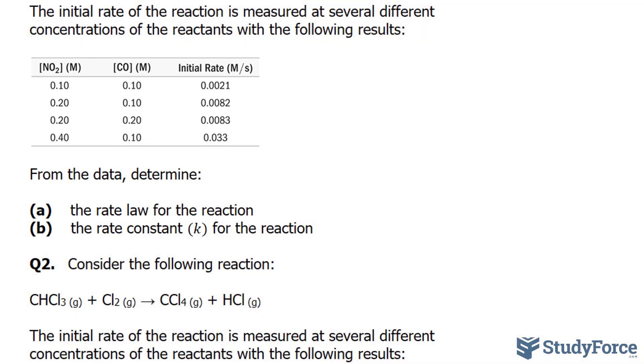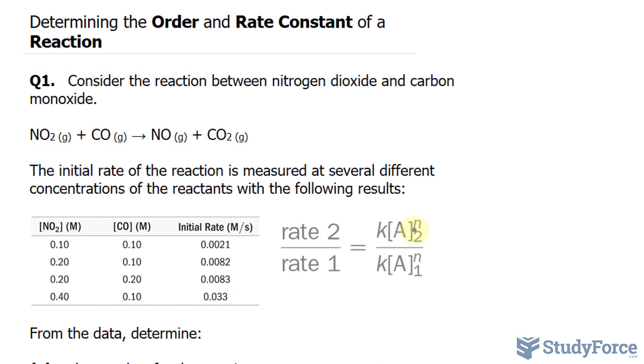Let's begin with question A. You can find the reaction order for any reactant by substituting any two initial rates and the corresponding initial concentration into the ratio of rate laws to determine the order n. The equation that I'm referring to, the ratio, is shown on your screen.